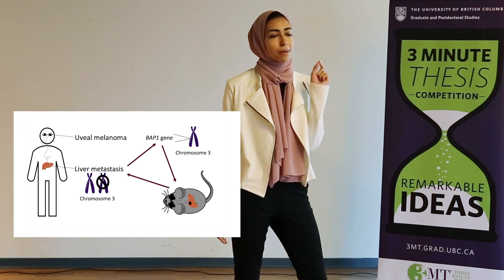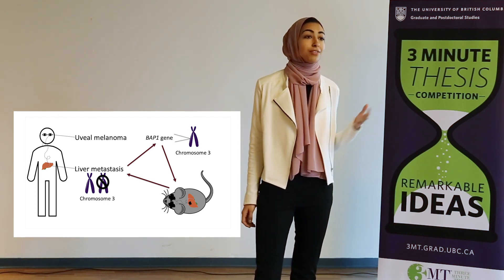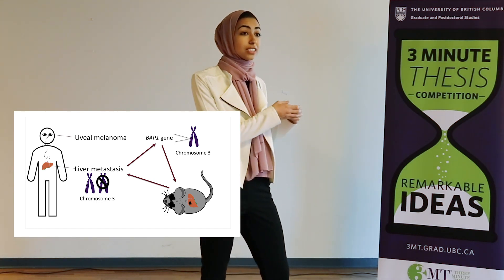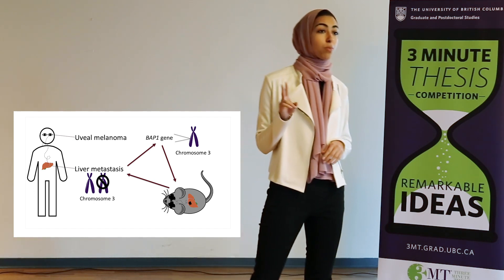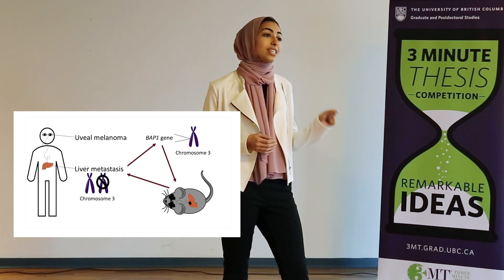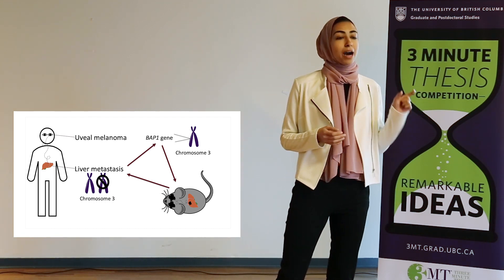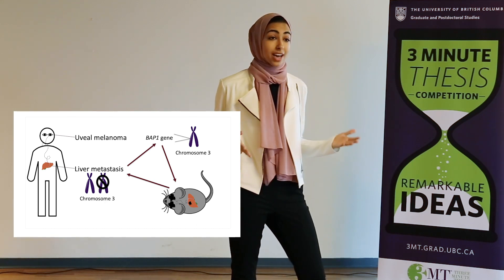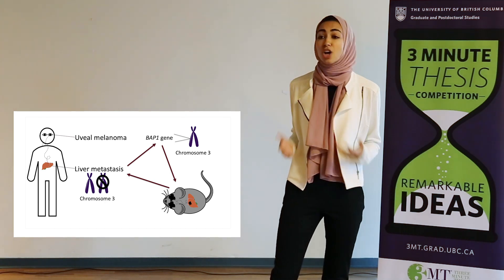Within chromosome 3 is a gene called BAP1, and this is frequently mutated in uveal melanoma patients who have liver metastasis. BAP1 normally inhibits the growth of cancer cells, so naturally the loss of either one or both copies of BAP1 should promote cancer formation. However, BAP1 loss on its own does not lead to uveal melanoma, but instead it is an additional mutation in the BAP1 gene that causes the cancer to spread to the liver. As of yet, the reason behind why BAP1 mutations lead to liver metastasis has not been well established.